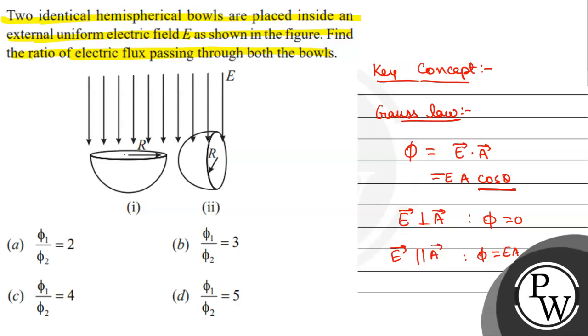Here we have this area vector. This is parallel, this is the vector pointing out, that will be perpendicular. So phi_1 will be equal to E·2πr².